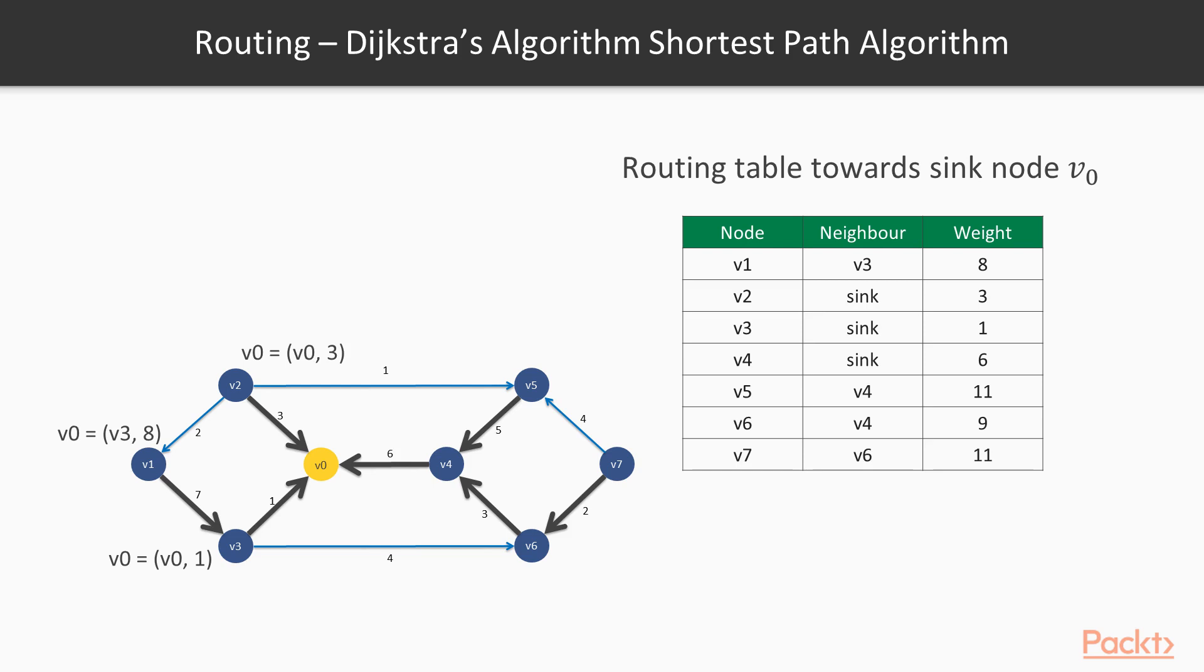For example, if a message m destined for v0 arrives at v2, then v2 is going to look up on its table and route this message to its neighbor node v0, which in this case is our destination node.